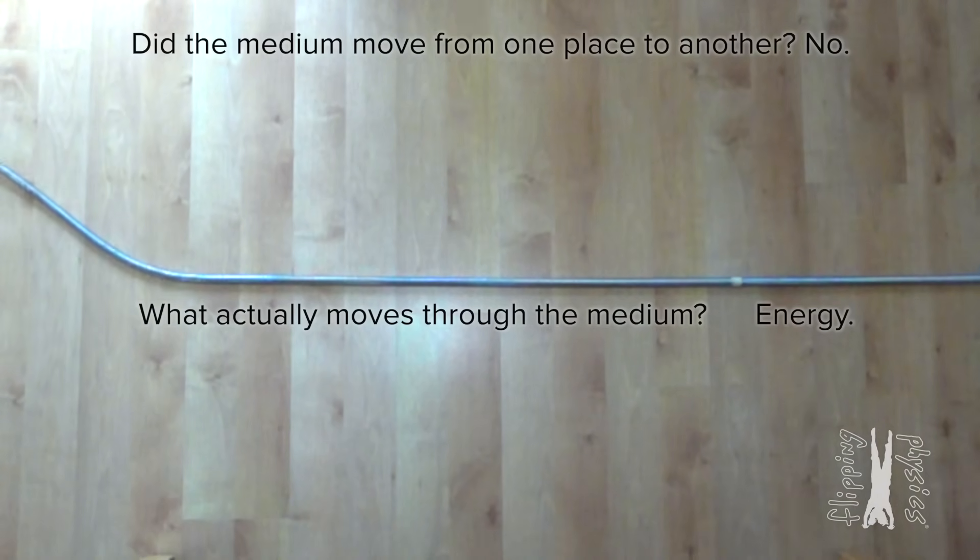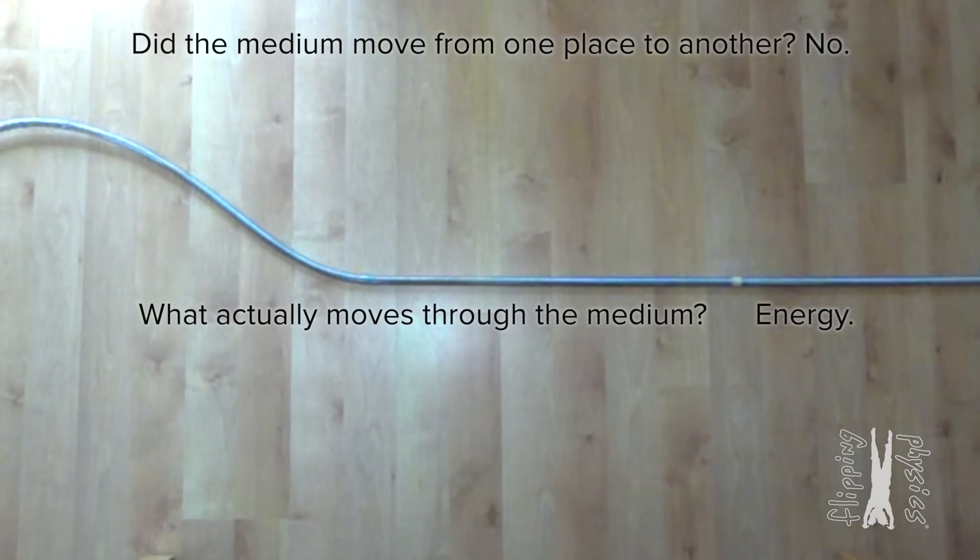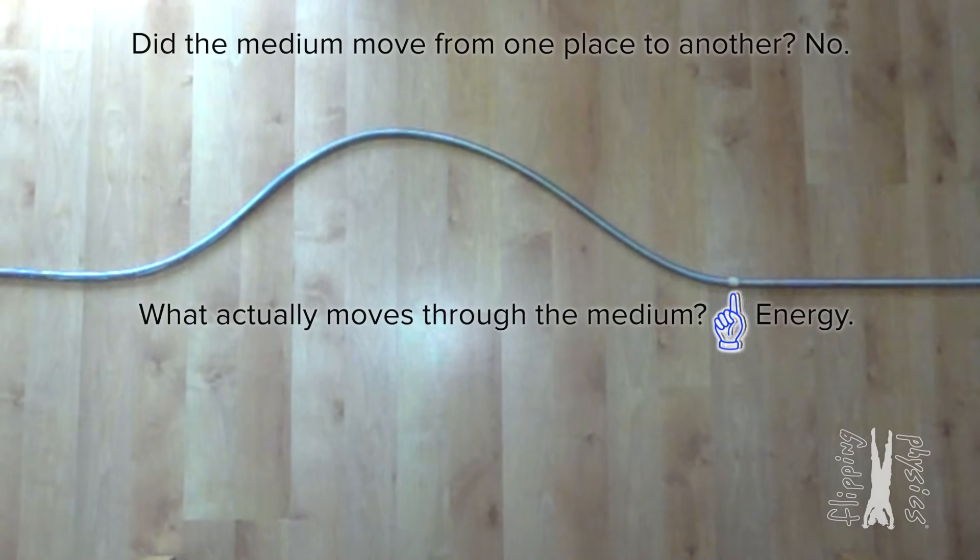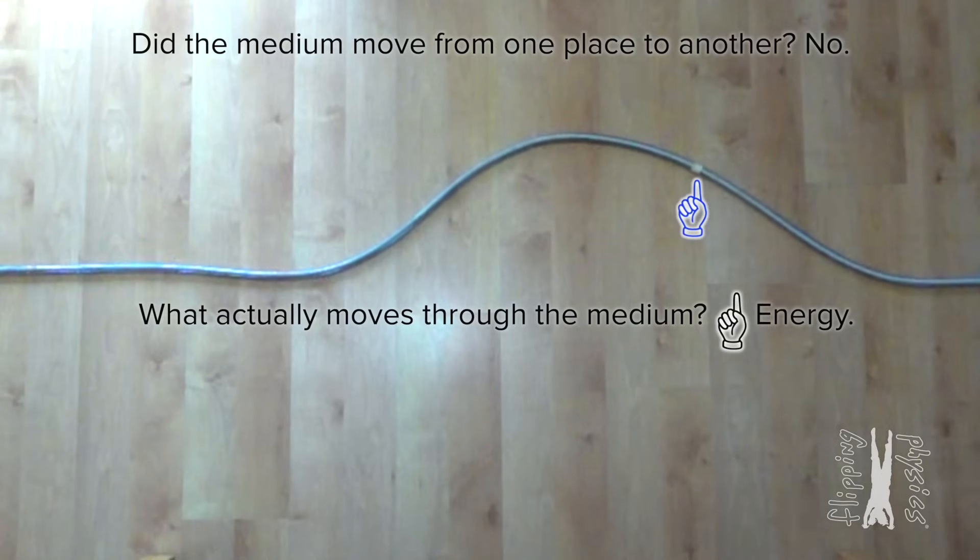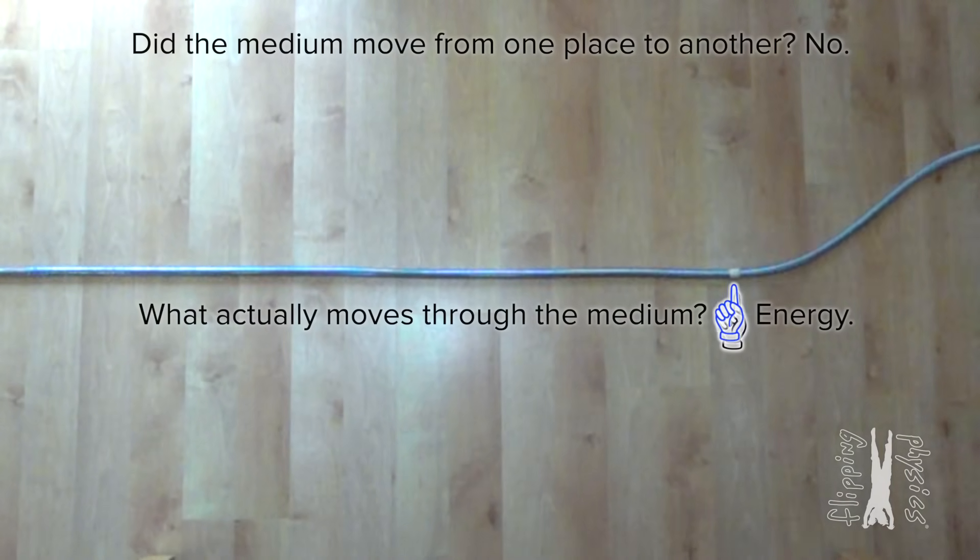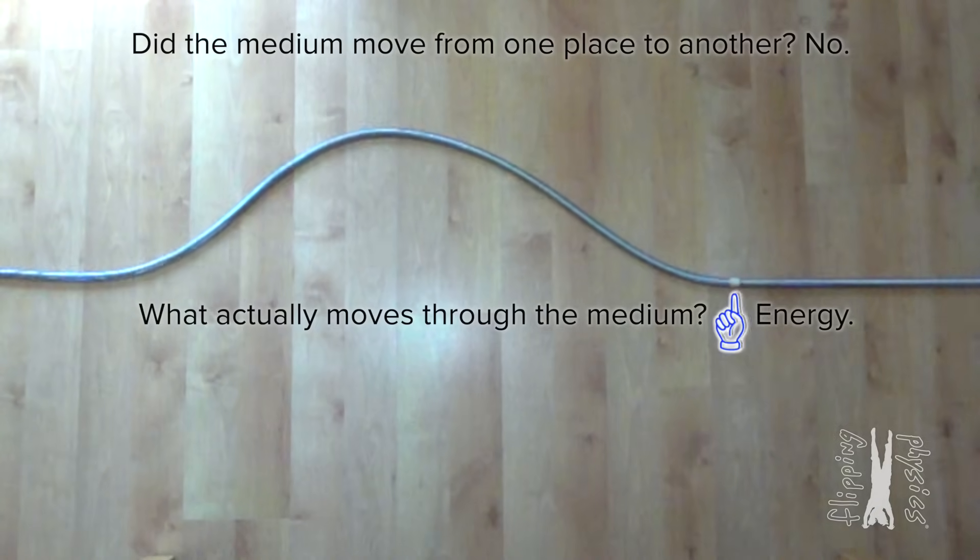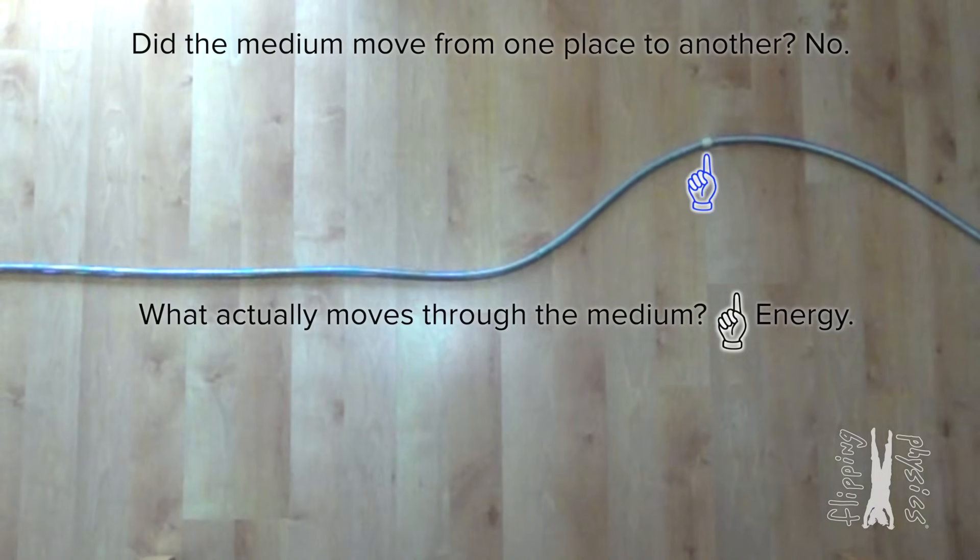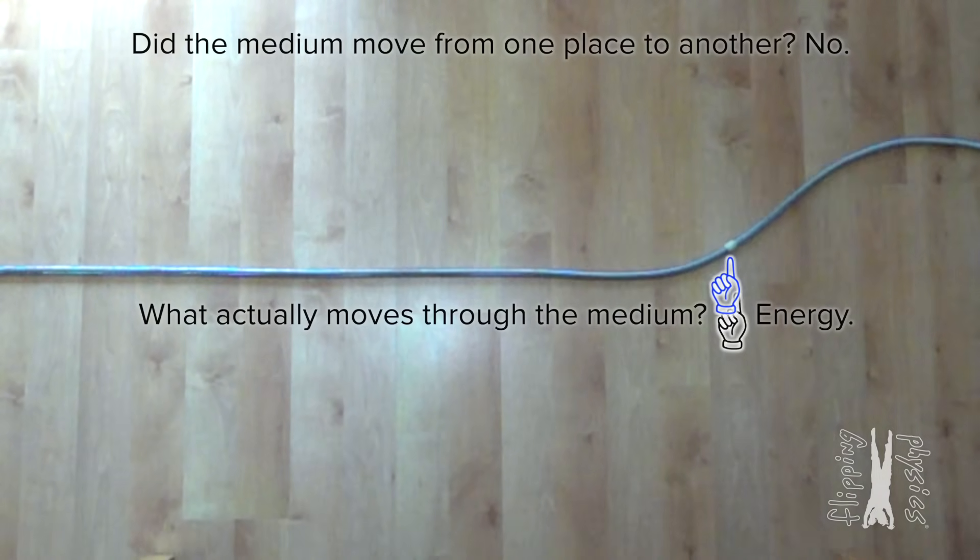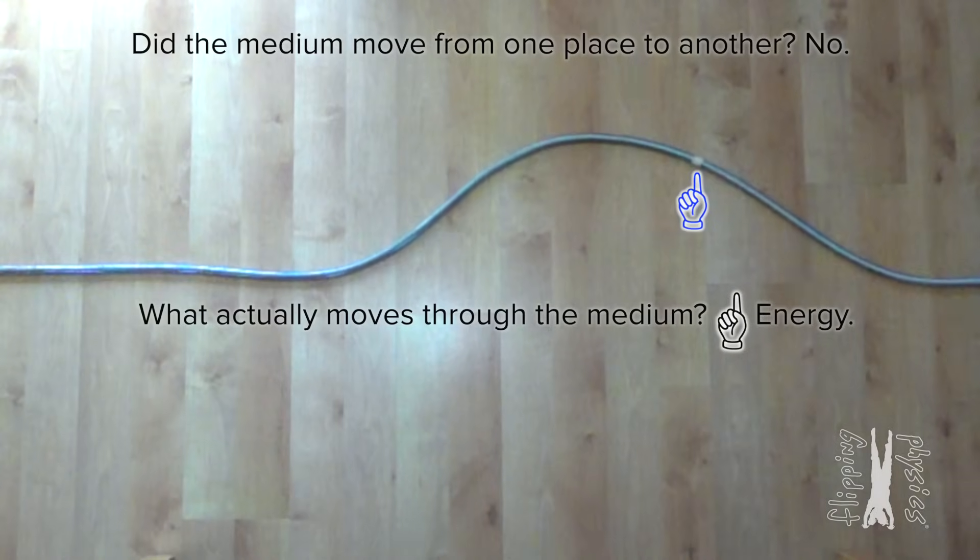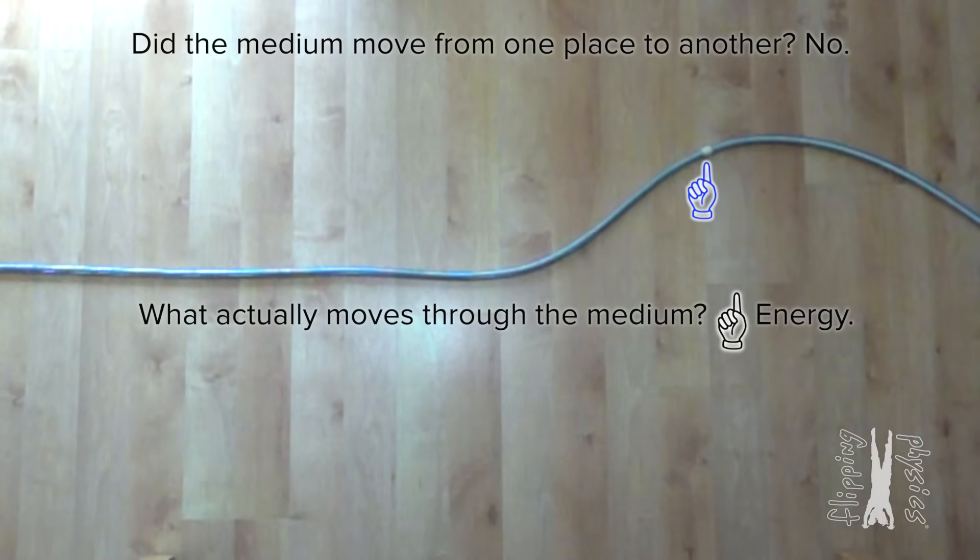But it looks like the spring moves, so that does not make sense to me. Okay Bobby, let's follow the motion of the piece of tape, which is on the spring, and therefore is a part of the medium. As the wave pulse travels along the spring, the tape does move. However, the overall displacement of the piece of tape is pretty darn close to zero, because the medium does not change locations. Bobby, does that help? Yeah, I can see the overall displacement of the spring is almost zero.